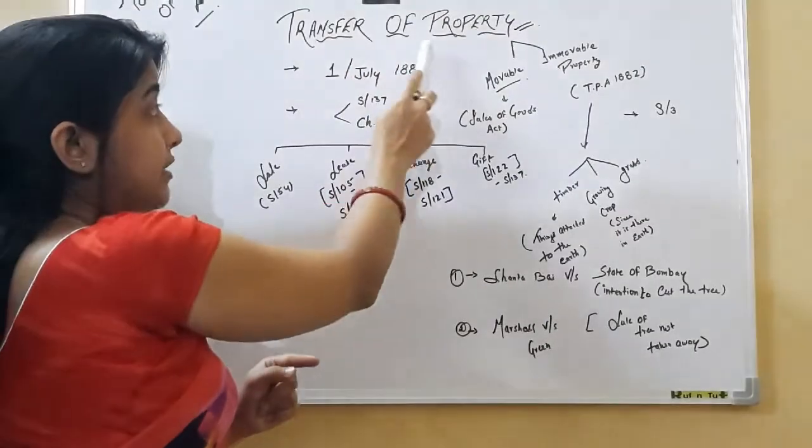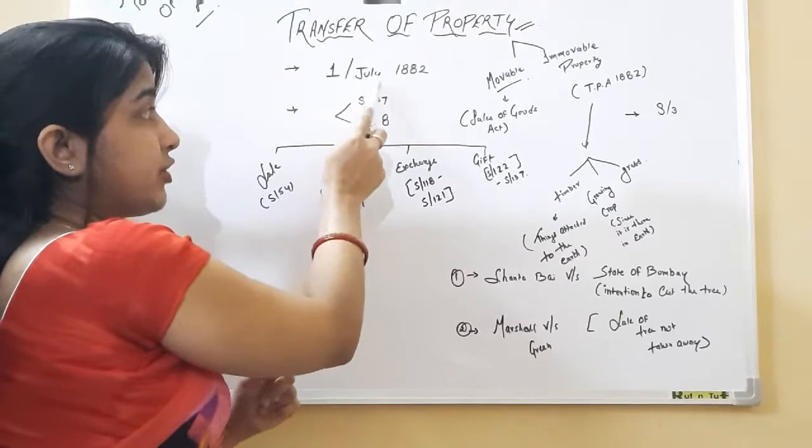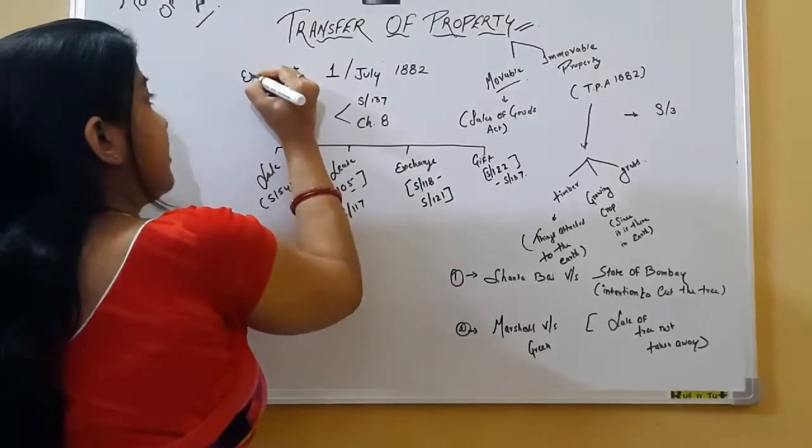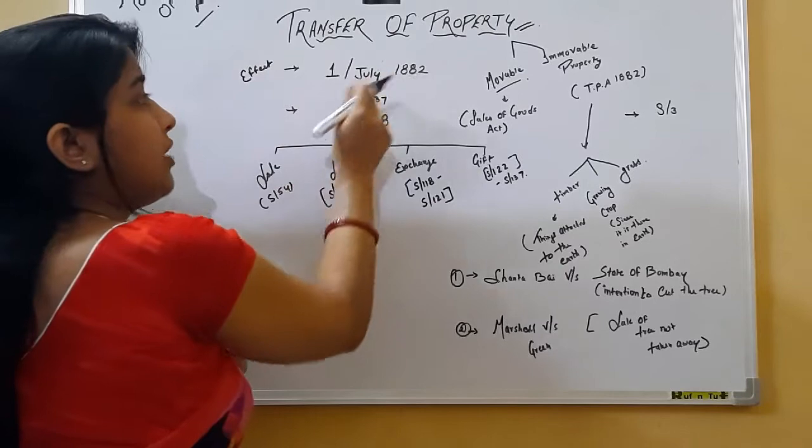First of all, this act will take into effect on 1st July 1882.